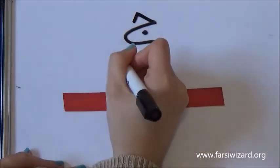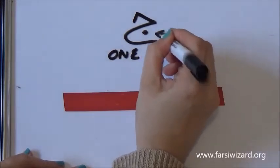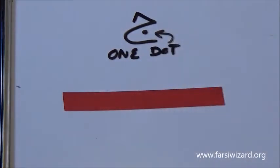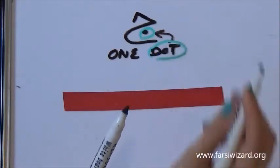So, this is the first one, which is the letter Jim in Farsi. It's called Jim. It has one dot in the belly, as you can see. This is the one that is the equivalent of the letter J in English. For now, please focus on where the dot is.